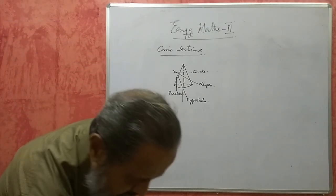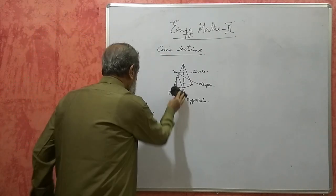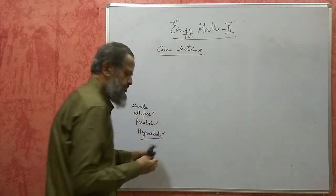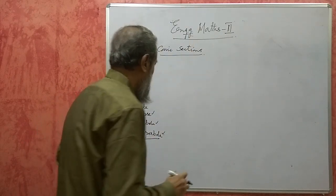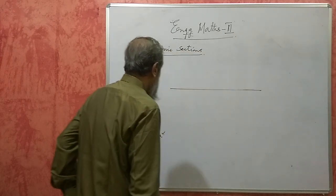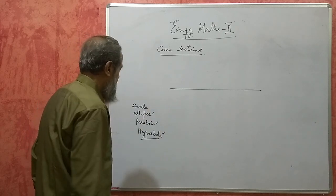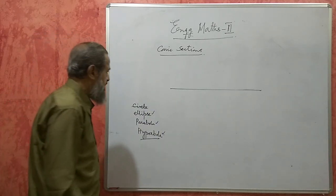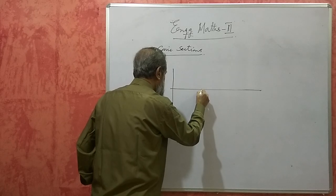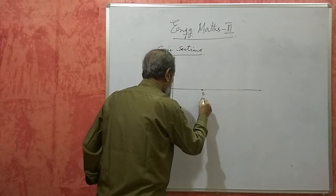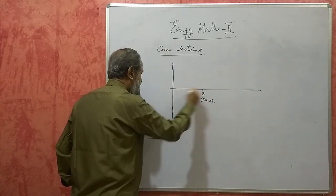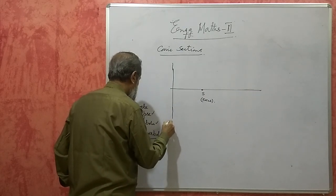These curves can also be defined in one more way — they can be defined as the locus of a point. Locus of a point means it is free to move. Suppose this is a fixed point — this S is called the focus. This line, perpendicular to this, is called the directrix.